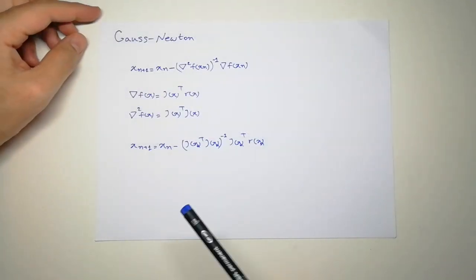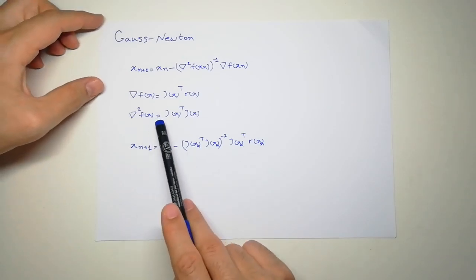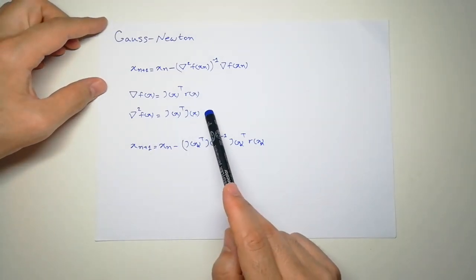What we calculated here are the gradient and the second-order gradient or the Hessian matrix if the data has more than one dimension.